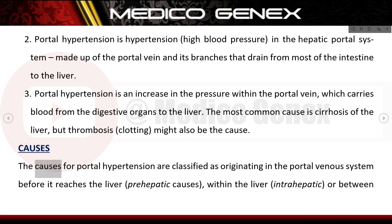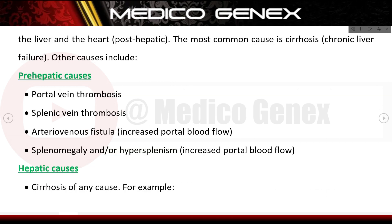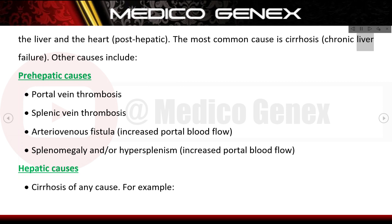The causes for portal hypertension are classified as originating in the portal venous system before it reaches the liver (pre-hepatic causes), within the liver (intra-hepatic), or between the liver and the heart (post-hepatic). The most common cause is cirrhosis — chronic liver failure.